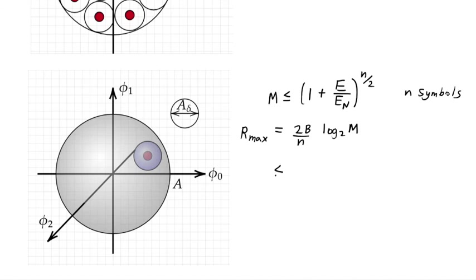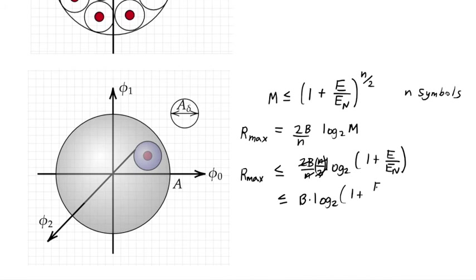And because my M is limited as given above, my R max then is less than or equal to two B over N log base two of one plus E over E sub N. And then the N over two, because it's a logarithm, I'm going to take it down and have the N over two over here, which is then going to cancel here. And my R max is going to be the bandwidth times log base two of one plus E over EN.